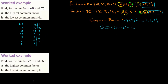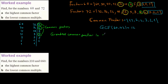I'm going to circle the common factors — the prime numbers that divide both numbers. The common prime factors are 2, 2, and 3. The Greatest Common Factor is the product of these common factors: 2 × 2 × 3 = 12. This matches the answer we already found before.